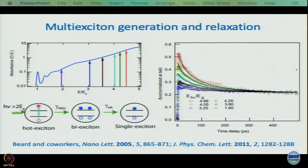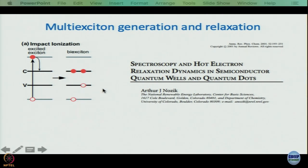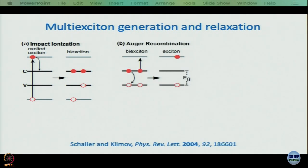This is rather complicated dynamics because it is not simply that hot excitons form and cool down to single excitons — the intermediacy of biexcitons is always there. To understand this, one needs to analyze the data very carefully. In the seminal paper of Nozick, what was discussed in this 2001 Annual Review of Physical Chemistry is what happens after impact ionization. Impact ionization means formation of a hot exciton, and the first step is always biexciton generation. Taking a clue from there, Klimov and Scheller and Klimov did a more elaborate study a few years later — these are papers that have truly pushed the frontier.